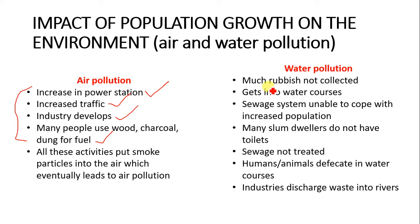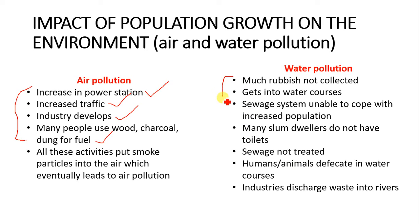In the case of water pollution, more rubbish that is not collected gets into water courses. Sewage systems will be unable to cope with an increased population. Many slum dwellers do not have toilets, so sewage is usually not treated. Humans and animals defecate in water courses, and industrial discharge waste into water. All these activities increase due to population growth and eventually lead to increased water pollution.